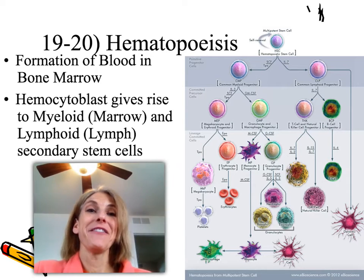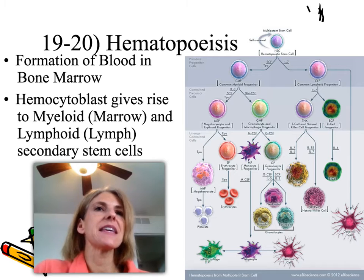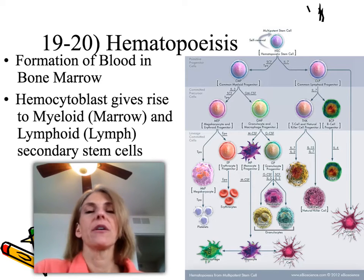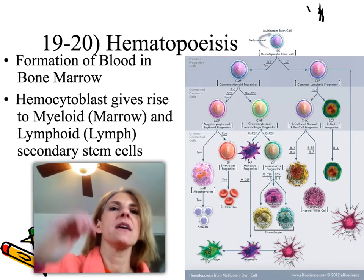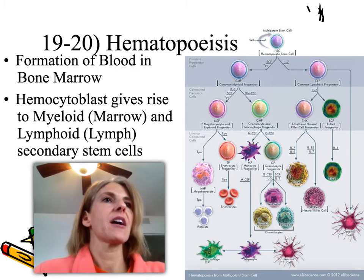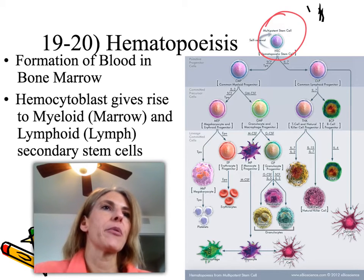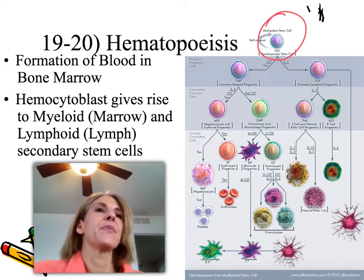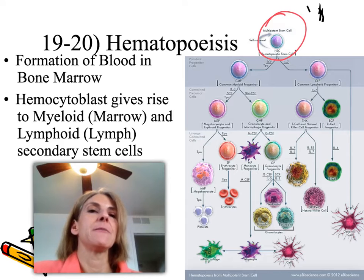Hematopoiesis — the formation of blood cells. 'Hema' means blood, 'poiesis' means formation. This refers to how one stem cell can become any type of blood cell. That stem cell is called a hematocytoblast or hemocytoblast — a multipotent or pluripotent stem cell. It differentiates into one of two branches: once in a branch, it's limited in what cells it can become. The hematocytoblast is your original stem cell for all blood cells.